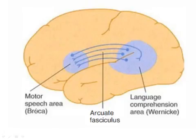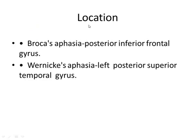Here is the motor speech area — Broca's area. Here is the language comprehension area, which is Wernicke's area. And here is the arcuate fasciculus between the two areas. Broca's aphasia is located in the posterior inferior frontal gyrus, and Wernicke's aphasia in the left posterior superior temporal gyrus.